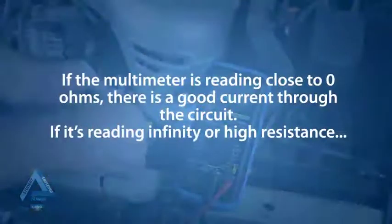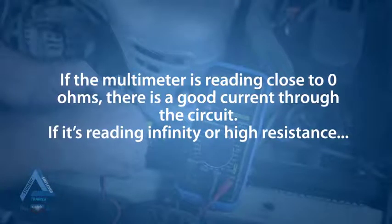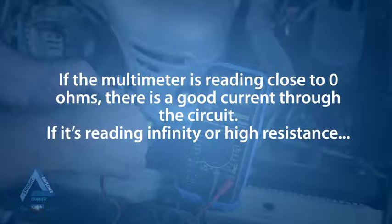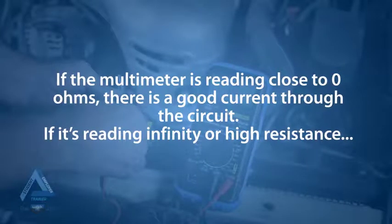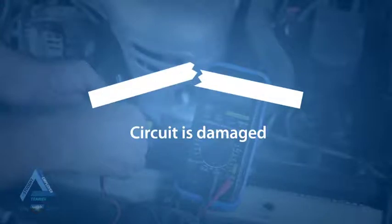If the multimeter is reading close to zero ohms, there is good current through the circuit. However, if it is reading infinity or giving an unnecessarily high resistance that should not be in the circuit, it may mean your circuit is damaged in some way.